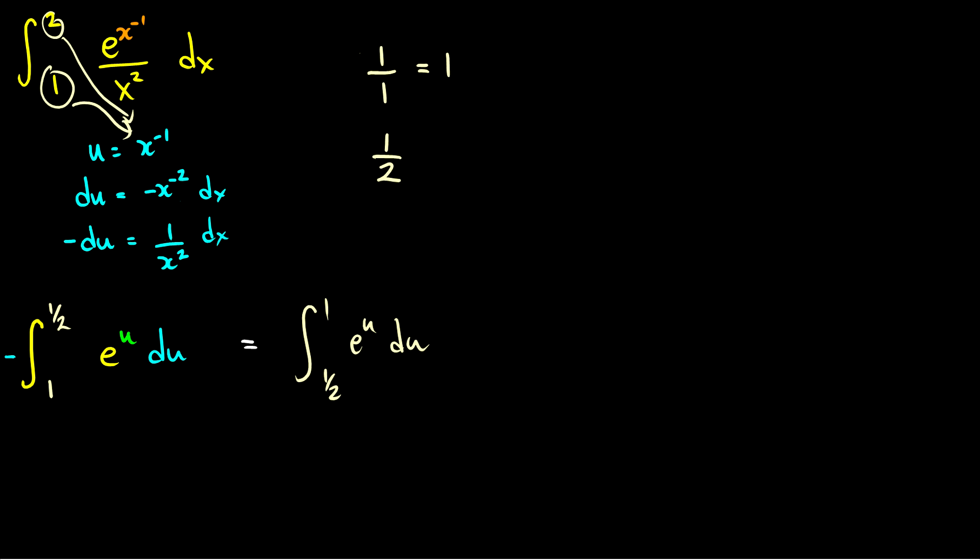And now the substitution is pretty straightforward. The antiderivative of e to the u is just e to the u. So this is e to the u from one half to one, which is just equal to e minus e to the one half. And we can make this look a little bit nicer by saying this is e minus the square root of e. So that is the first solution.